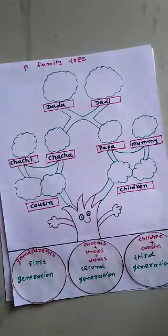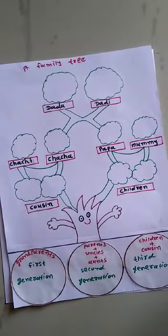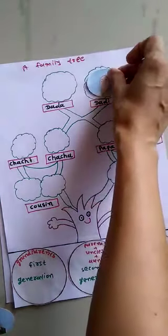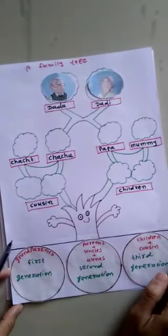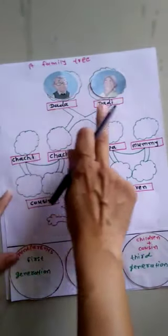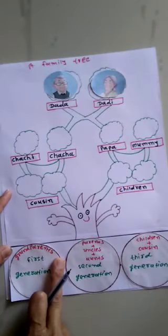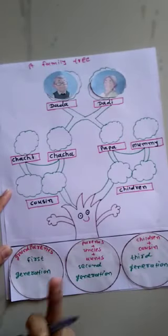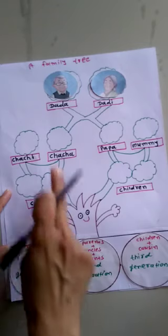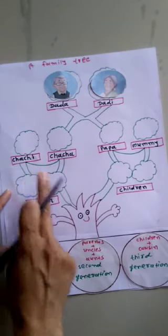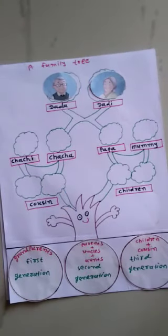Now let's start to make a family tree. This is Dadiji and this is Dadaji — Dada and Dadi — that means our grandparents. Grandparents form the first generation of a family tree.